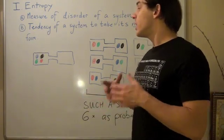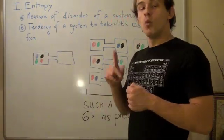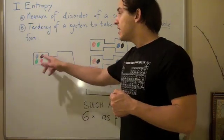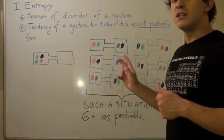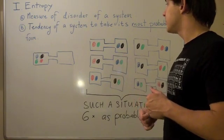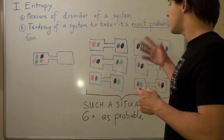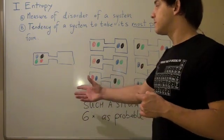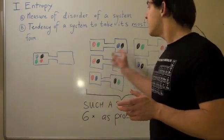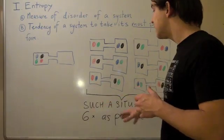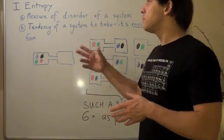What's the likelihood that we're going to get four different molecules all on the left side? Well, this can only occur one way. What's the likelihood that you get two different molecules on the left container? Well, there are six different ways that this can occur, and this means this type of situation is six times as probable. That basically means that if you take a snapshot at any given time of this system, this picture is six times more likely to occur. So now we can come up with a better definition of entropy using probability.